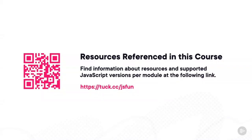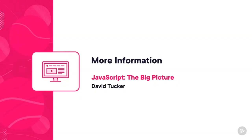Via a short link and QR code, you can get to a web page that will link to sites like caniuse.com for each module to show you what engines support the features we're working through together. If you're interested in learning more about JavaScript versions, go back and check out JavaScript the Big Picture, where you can learn how to track future releases of the ECMAScript specification, who governs that specification, and the history that got us to where we are today.